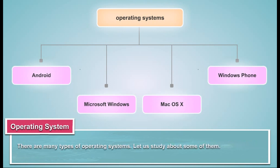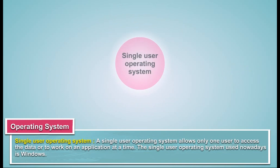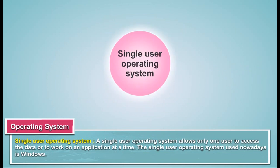There are many types of operating systems. Single User Operating System: A single user operating system allows only one user to access the data or to work on an application at a time. The single user operating system used nowadays is Windows.